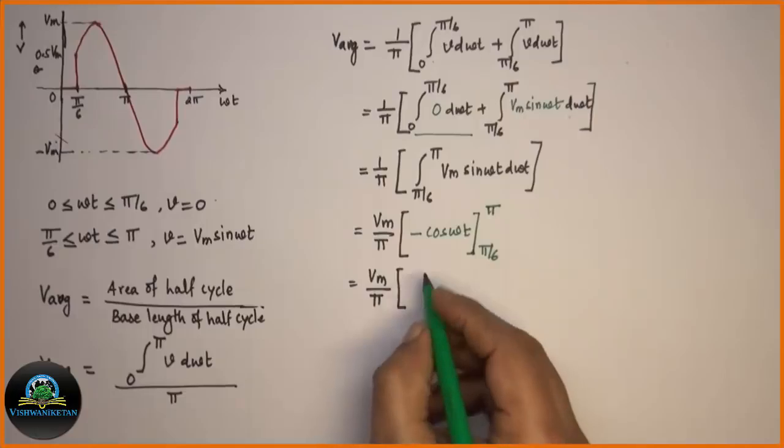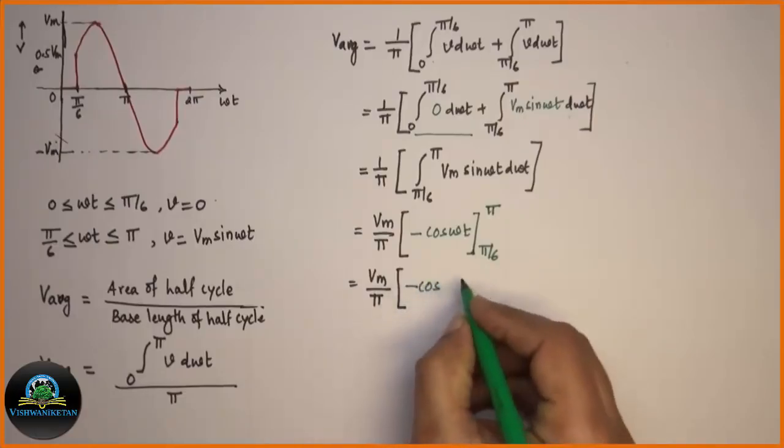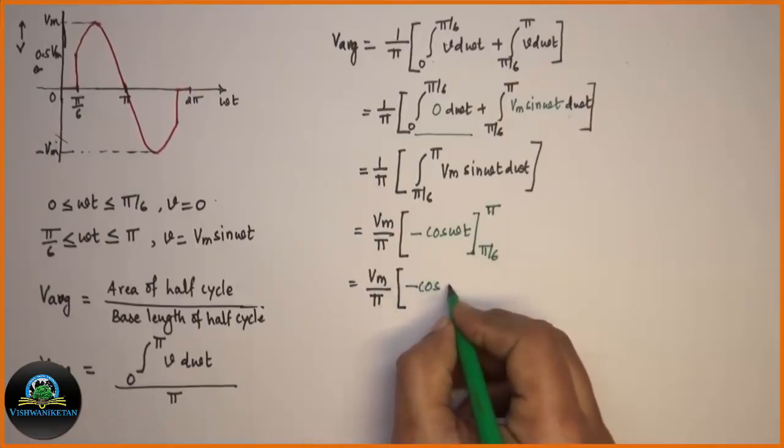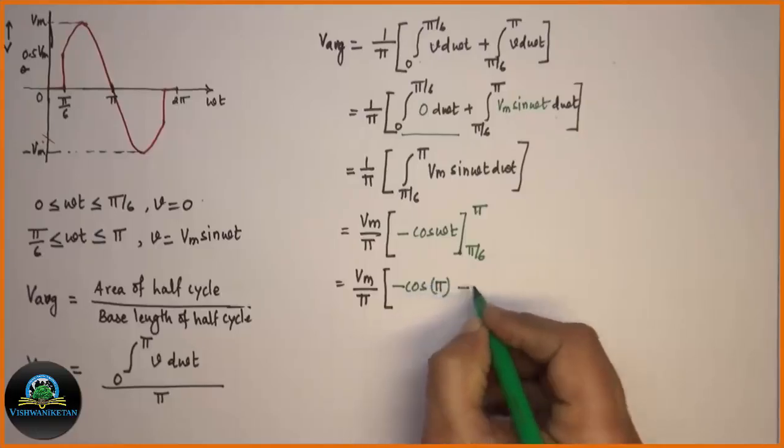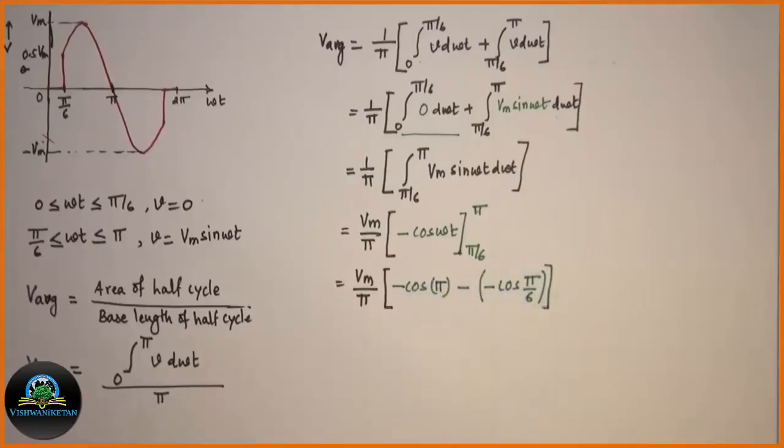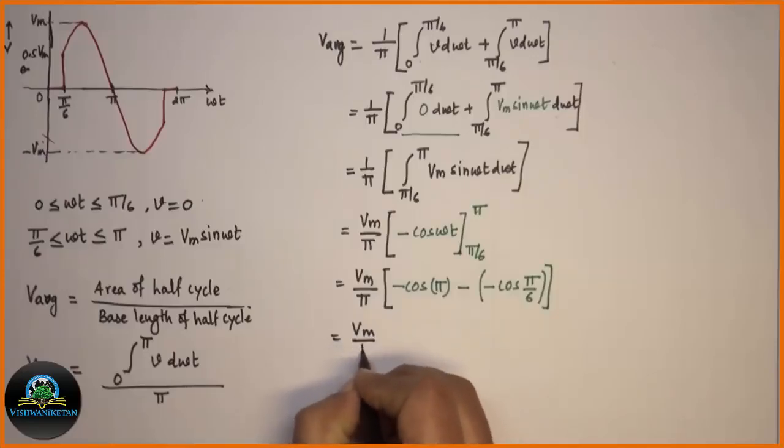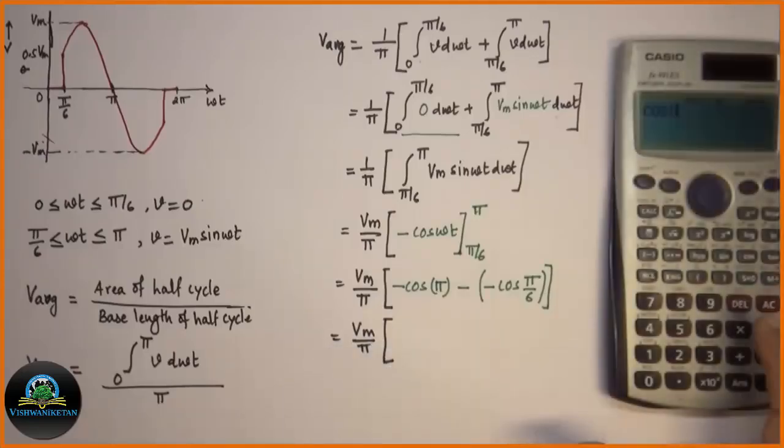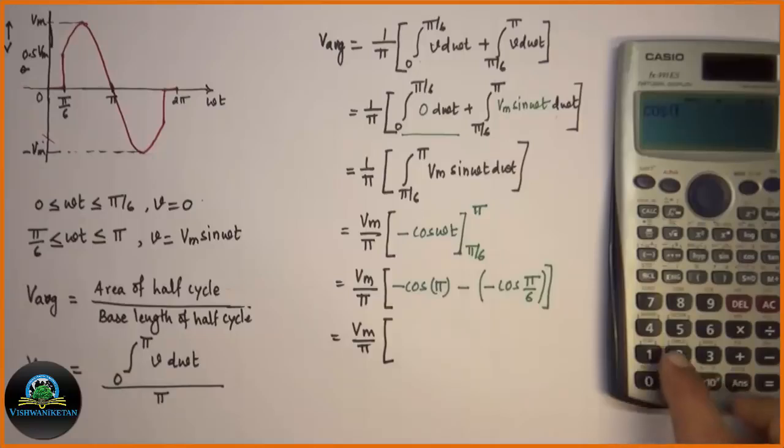Let us substitute the values of lower interval and higher interval. If you put cos pi, the pi will be represented as 180. So cos of 180 is minus 1.